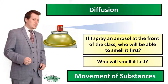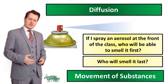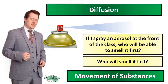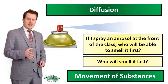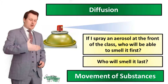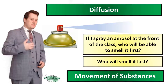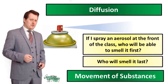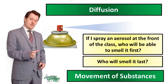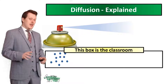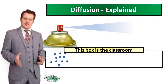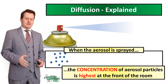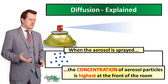First let's talk about this process called diffusion. If I had an aerosol can and I sprayed it at the front of the classroom, which students would be able to smell it first and which students would smell it last? It makes sense that the people closest to me would smell it first and those furthest away would smell it last. But how do the particles travel from one part of the classroom to the other? Let's say this box represents the classroom — when I spray the aerosol, the concentration of those aerosol particles is highest at the front of the room.